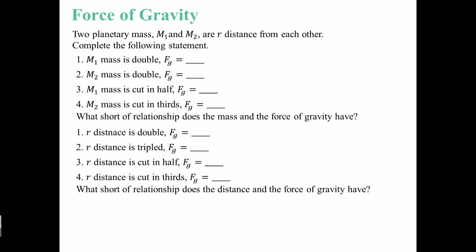Here are all the different ways that you could look at how force of gravity changes depending on what change. Here you have two planetary masses, M1 and M2, that are r distance away from each other. Complete this following statement. So you are essentially using Fg equals G M1 M2 over R squared here.